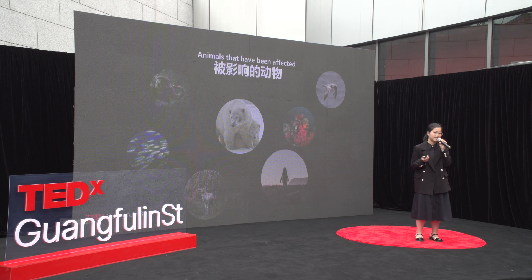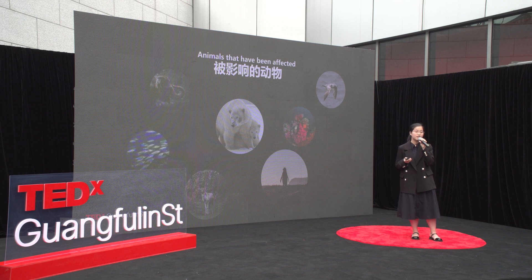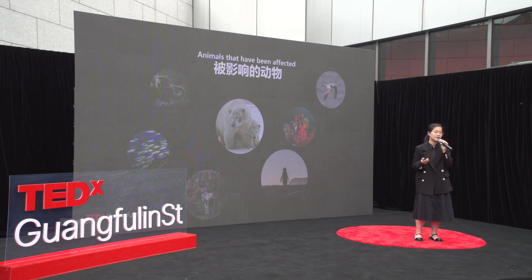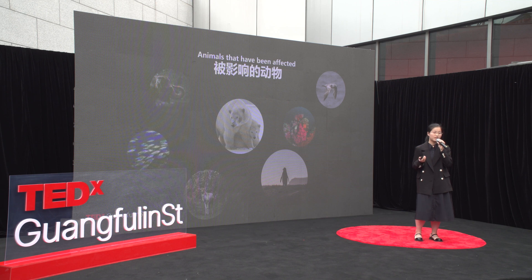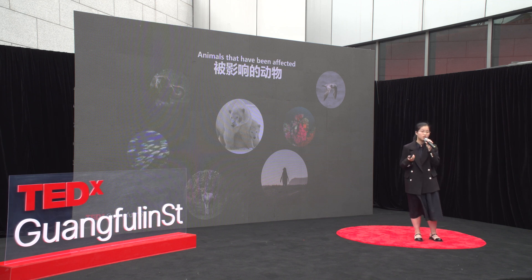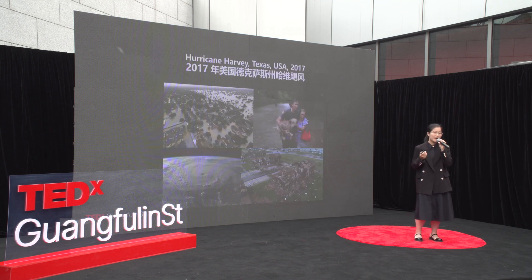Another effect of global warming is the increase in extreme weather conditions. The rising temperatures are leading to more frequent and severe heat waves, droughts, and hurricanes. This is causing damage to crops, homes, and infrastructure, and is leading to the displacement of communities. For example, in 2017, Hurricane Harvey caused over 125 billion dollars in damages in Texas, USA.